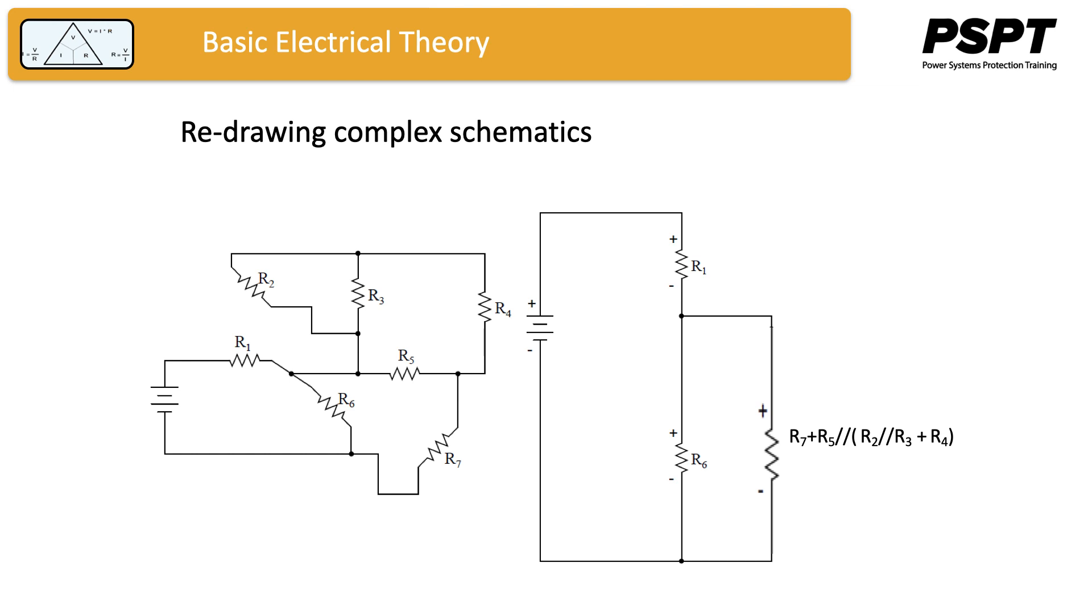That resistor is now obviously parallel to R6, so those two resistors can now be replaced by one resistor, which is R6 in parallel with the series combination of R7 plus R5 in parallel with the quantity R2 in parallel with R3 plus R4.